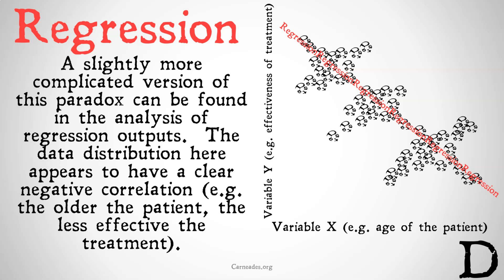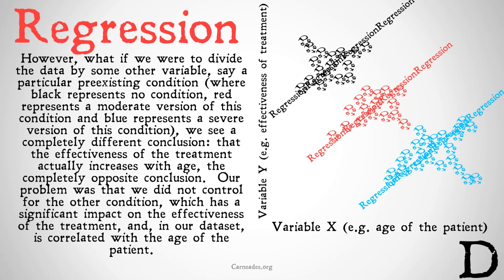However, looking at the data, there seems to be something more going on here. If we now control for some other variable — say, a particular pre-existing condition, where black represents no condition, red represents a moderate version, and blue represents a severe version — we now see a completely different conclusion: the effectiveness of the treatment actually increases with age in all three categories, which is the completely opposite conclusion from what we drew before.